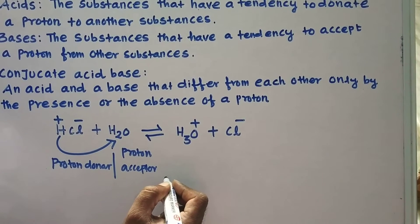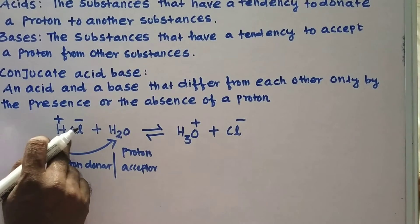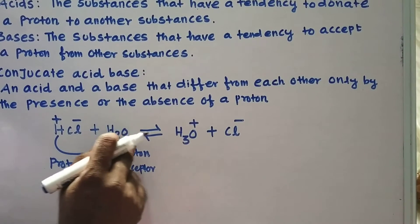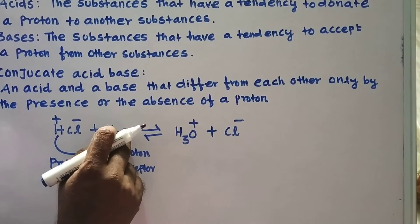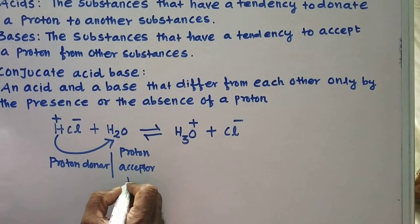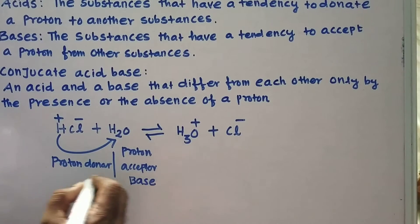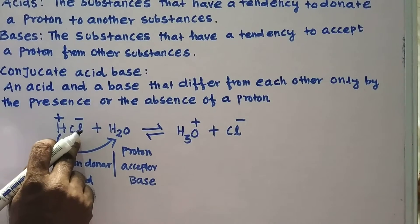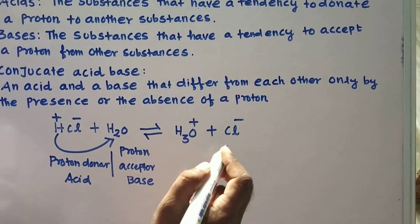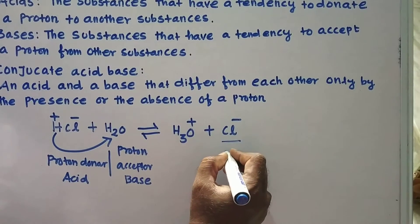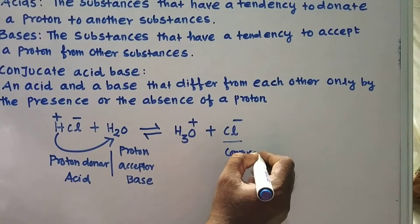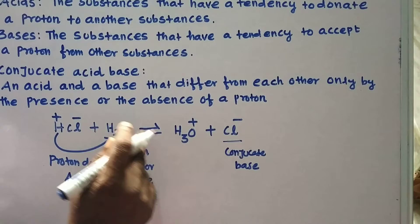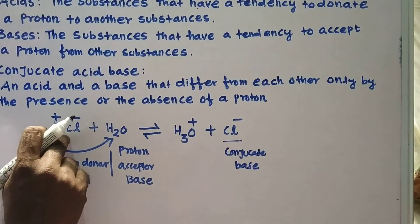Now we are going to see the conjugate acid-base. After donating its proton, HCl becomes Cl⁻, which acts as a base. The H₂O, after accepting the proton, becomes H₃O⁺, which acts as an acid. So an acid, after donating a proton, becomes a base — Cl⁻ is the conjugate base of HCl.